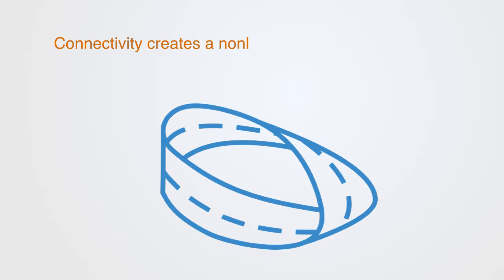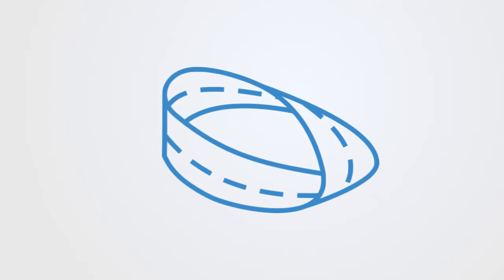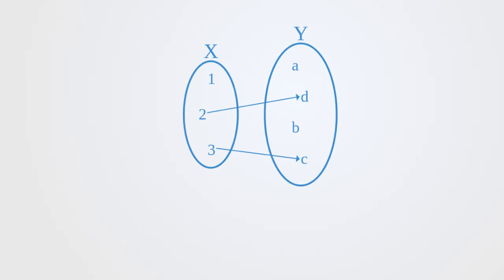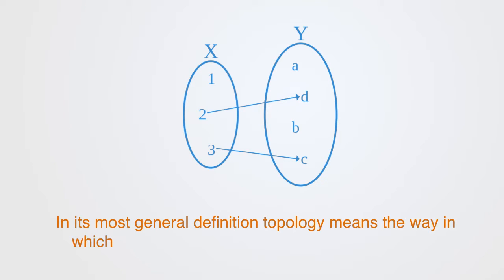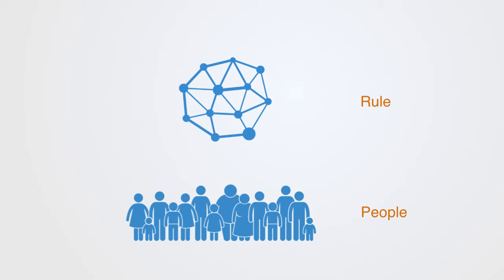Connectivity then creates a non-linear type of space, and that space is better called a topology. Topology is a branch of mathematics that can be used to abstract the inherent connectivity of objects while ignoring their detailed form. In its most general definition, topology means the way in which constituent parts are interrelated or arranged. Thus, for any set of things or people, we can have a different set of global rules for how they are interrelated or connected, and this is a topology.